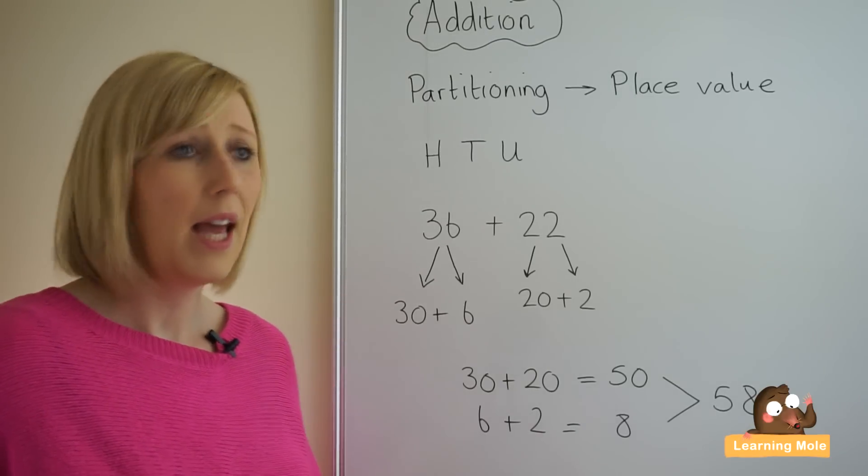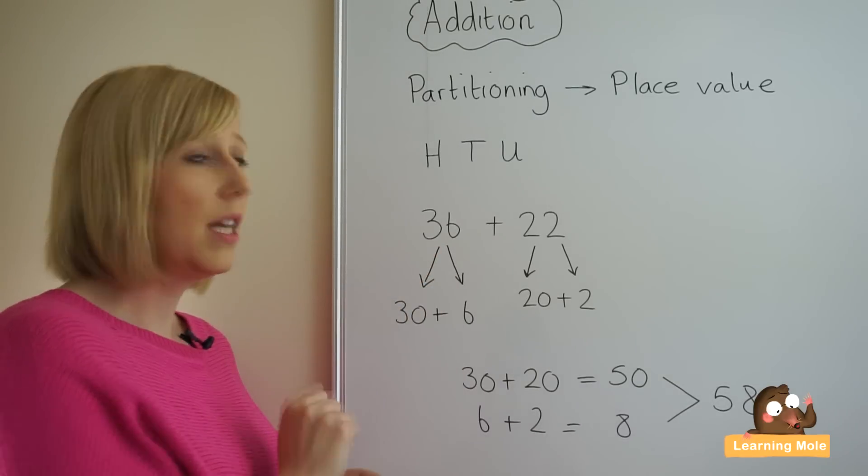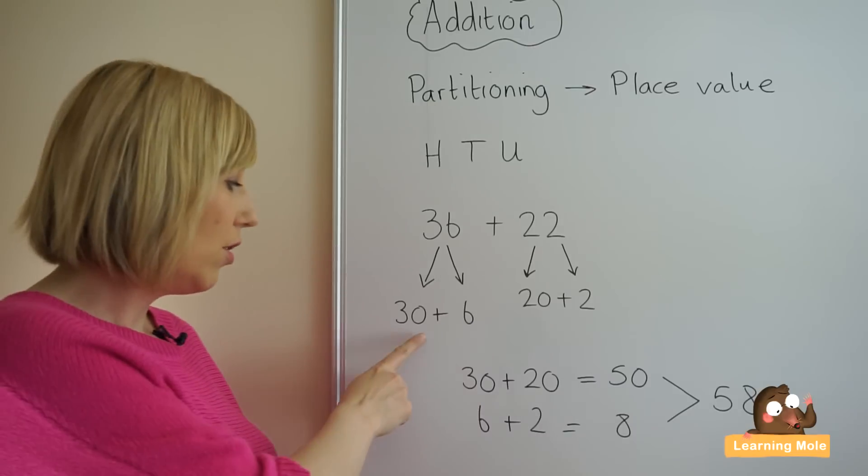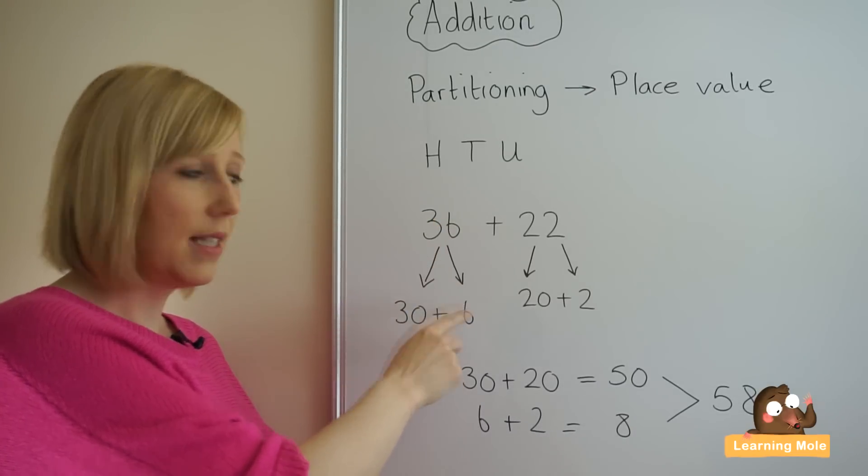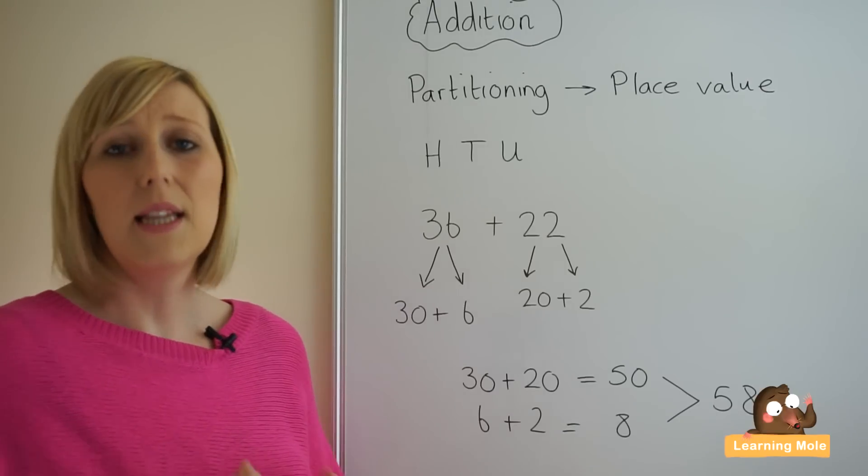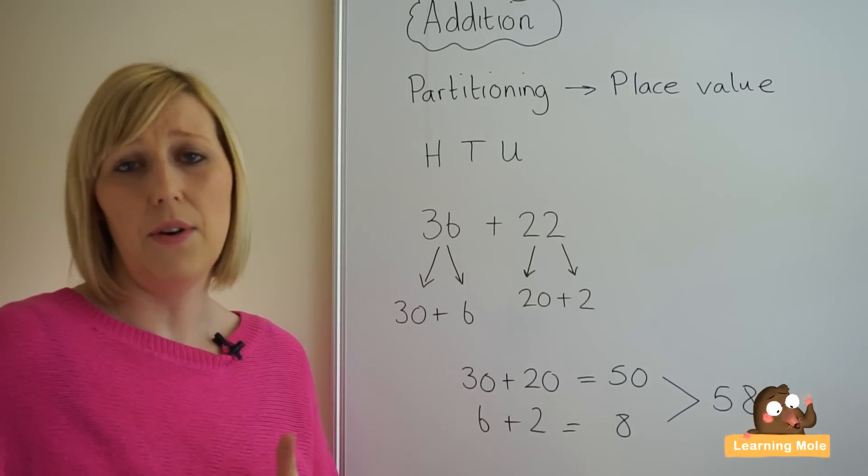And as you can see I've partitioned these numbers into 30, which is your three tens, and 6, which is your six units. So we've basically said partition this number up into 30 and 6, tens and units.